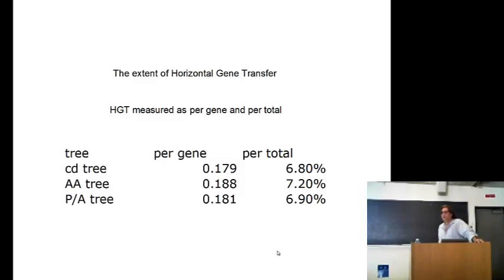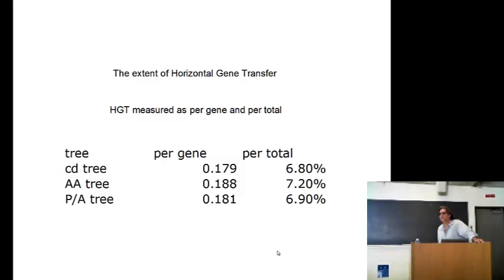How do you get a starting tree for that? You use the total evidence tree from that tree.